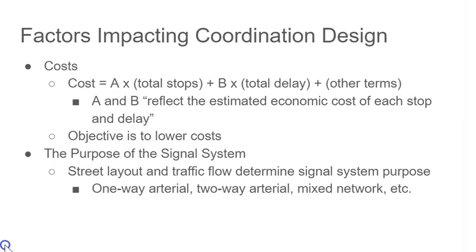One of the common factors that must be considered by engineers designing coordinated traffic signals is cost. Mathematically speaking, costs for the coordinated traffic signal system can be understood by the equation A times the number of stops plus B times the total delay time plus various other terms. In this formula, A and B reflect the estimated economic costs for each stop and delay. Another factor that influences coordinated traffic signal design is the purpose of the signal system. When designing a coordinated traffic signal system, an engineer will need to consider the layout of the street and the amount of traffic expected to encounter the signal.